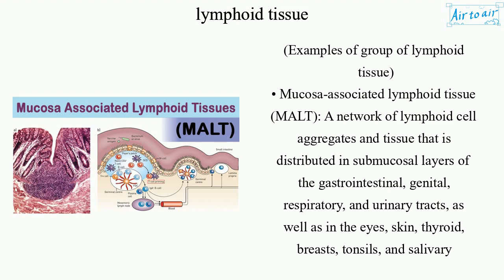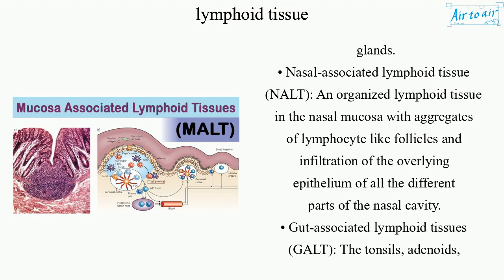Nasal-associated lymphoid tissue (NALT): an organized lymphoid tissue in the nasal mucosa with aggregates of lymphocyte-like follicles and infiltration of the overlying epithelium of all the different parts of the nasal cavity.